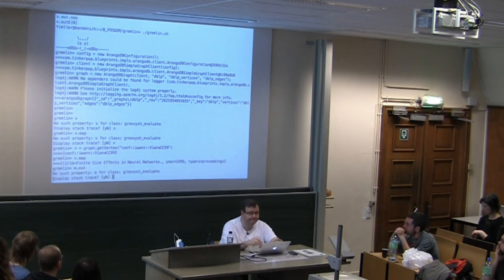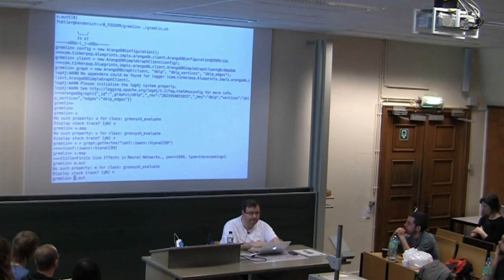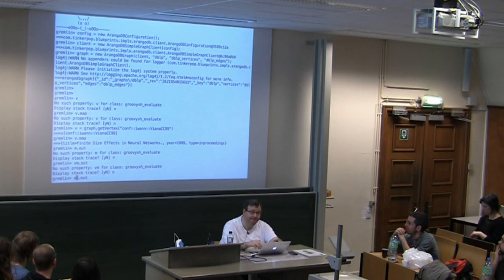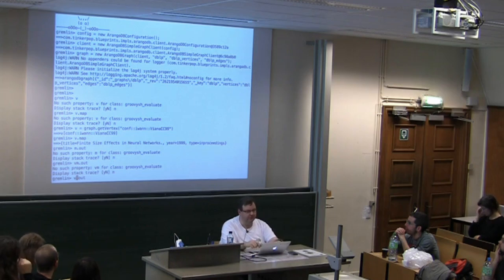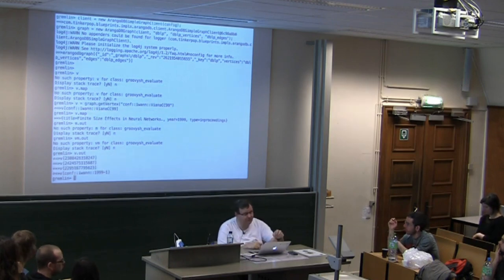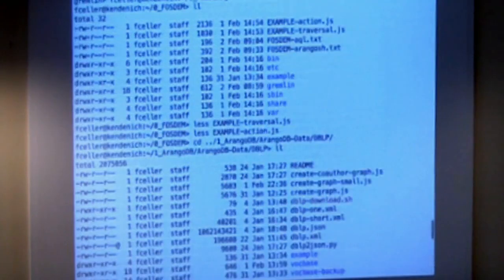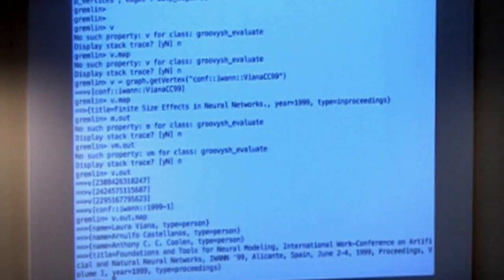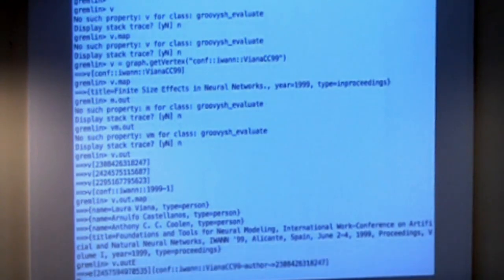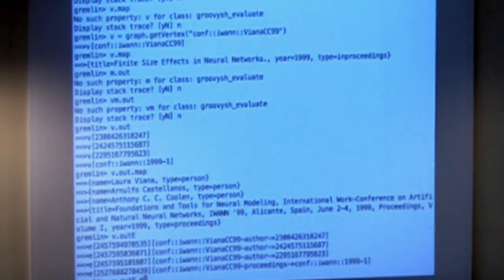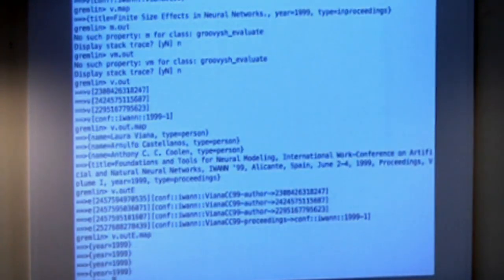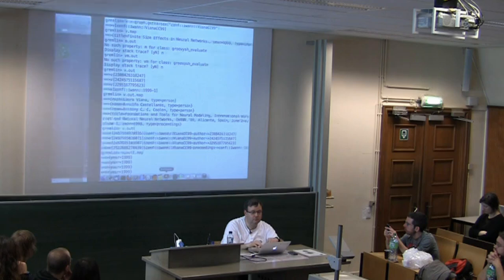So again, as before, just take the key, get the corresponding vertex. You can ask for the out vertices — that's the same result as before — or ask for the properties, or ask for the out edges and apply the map function and so on. That's quite straightforward to ask for the corresponding stuff.